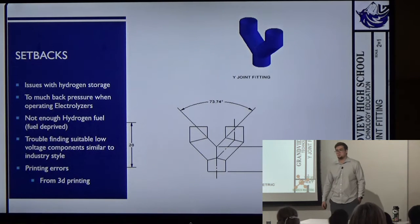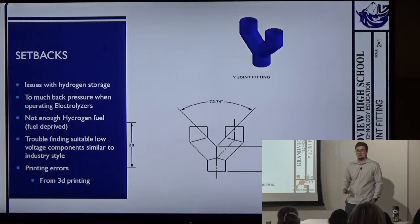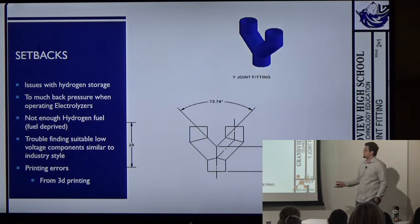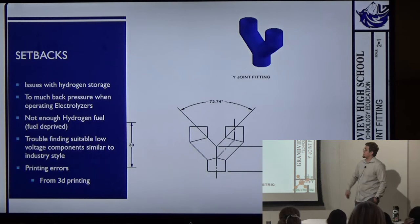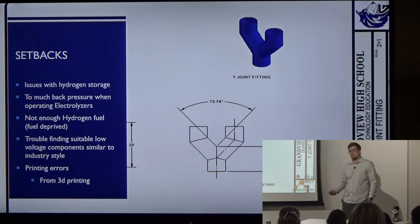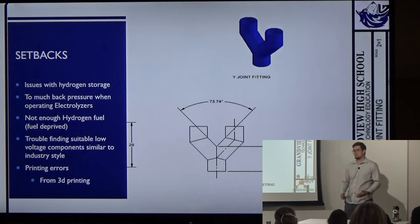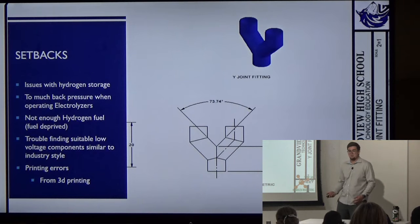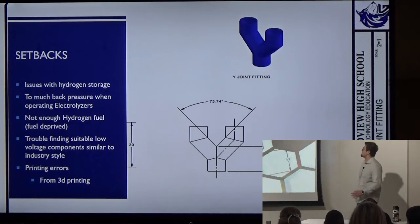Major setbacks include I had a lot of issues with hydrogen storage. It's not like water, I'm used to storing liquids. Liquids are easy to store. Air apparently is not. It just sneaks out like that. Too much back pressure when I'm off or reading both the electrolysis that I used. It would either try to explode or it would just dump everything out everywhere. That was a lot of fun a couple times. I didn't have enough hydrogen to properly run the cell. It's currently really hard to find suitable low voltage components that aren't a thousand dollars a piece. And printing errors. I printed really small parts on a 3D printer that's not designed to do that.